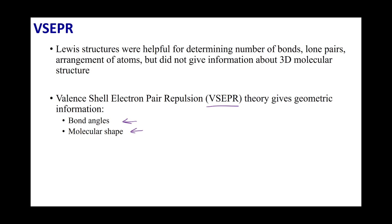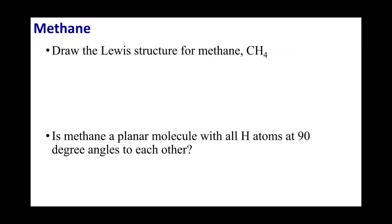VSEPR theory goes further than Lewis dot structures. Let's draw out the structure of methane. You saw me draw this in our last lecture — the Lewis dot structure of methane with the carbon in the middle and four hydrogens spread evenly about. Occasionally a student draws an alternative arrangement. Both of these structures are completely valid, because Lewis dot structures don't tell you bond angles or molecular shape — just who is connected to who and lone pairs and bonds.